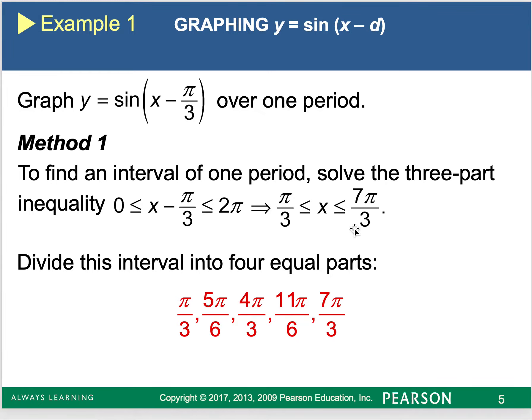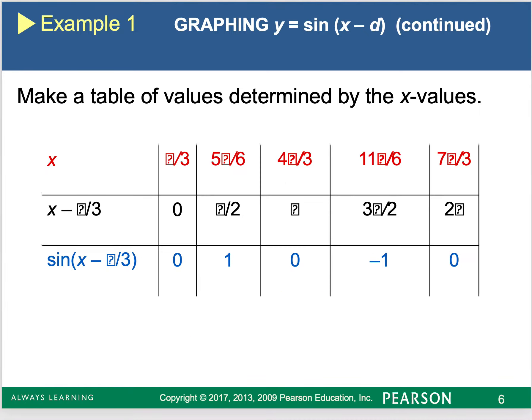So this would be my new period values. It's still 2π in width, but it's going to start at π over three and end at 7π over three. So if you notice, I've taken each of those five coordinates and I've added π over three to them. Or you could take 7π over three and π over three and divide it into four equal parts, whichever method is easier for you.